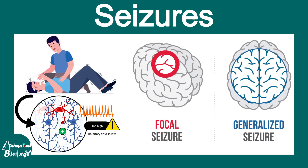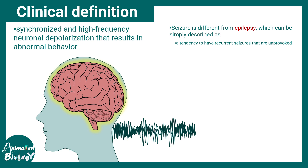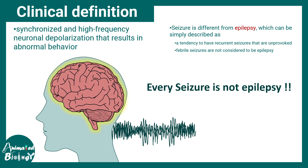In this video we'll be talking about seizures. Seizures are synchronized and high frequency neuronal depolarization that leads to abnormal behavior. Seizures are different from epilepsy, which can simply be described as recurrent seizures that are unprovoked. Febrile seizures are not considered epilepsy. Every seizure is not epilepsy, but if there is a recurrent seizure with no known triggers, one can consider the diagnosis of epilepsy.